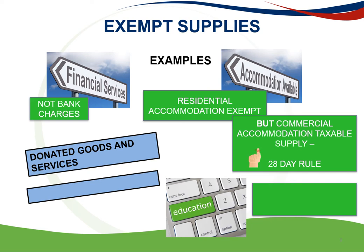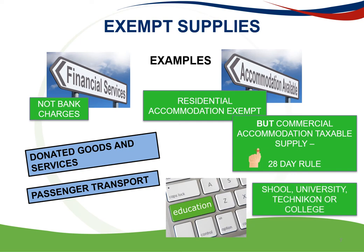There are also other examples of exempt supplies such as the transport of fare-paying passengers, which will be discussed in the next slide. Lastly, education: the supply of qualifying educational services by the state, a school, a public higher education institution, university, technicon or college. Also included are trade unions and the supply of child care services by a crèche or an after-school care centre. These are all exempt supplies.